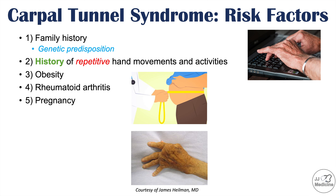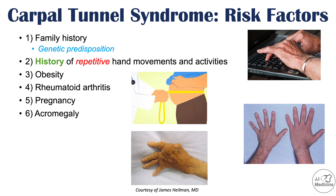Pregnancy can also increase the risk of carpal tunnel syndrome, which can partially explain why females are more likely to get this condition. Acromegaly is another associated condition — it leads to growth of tissue in particular areas of the body, including the hand and wrist, so soft tissue in the wrist can proliferate and compress the median nerve.